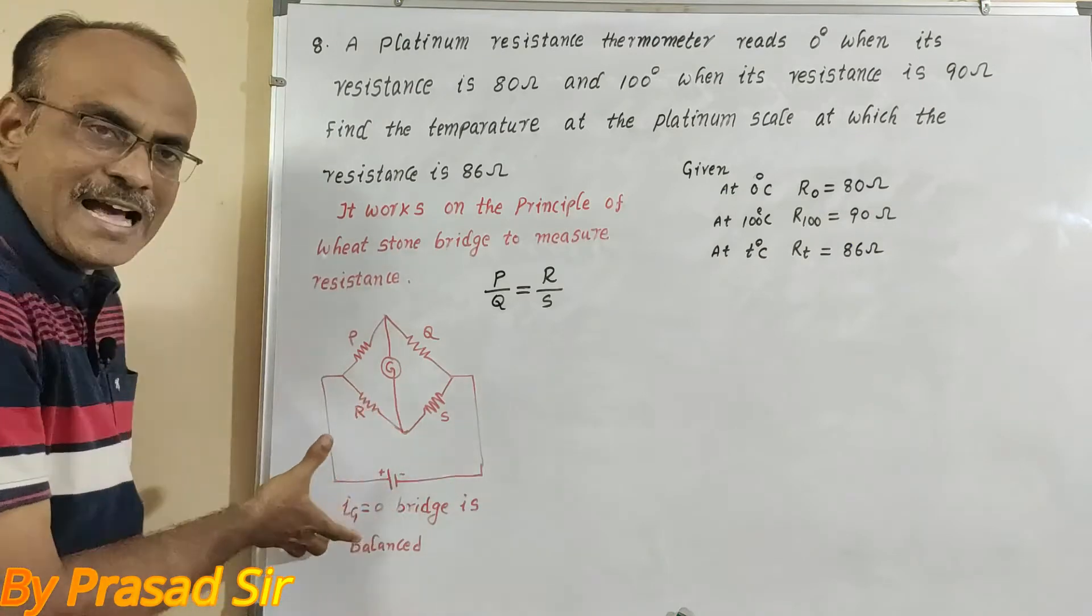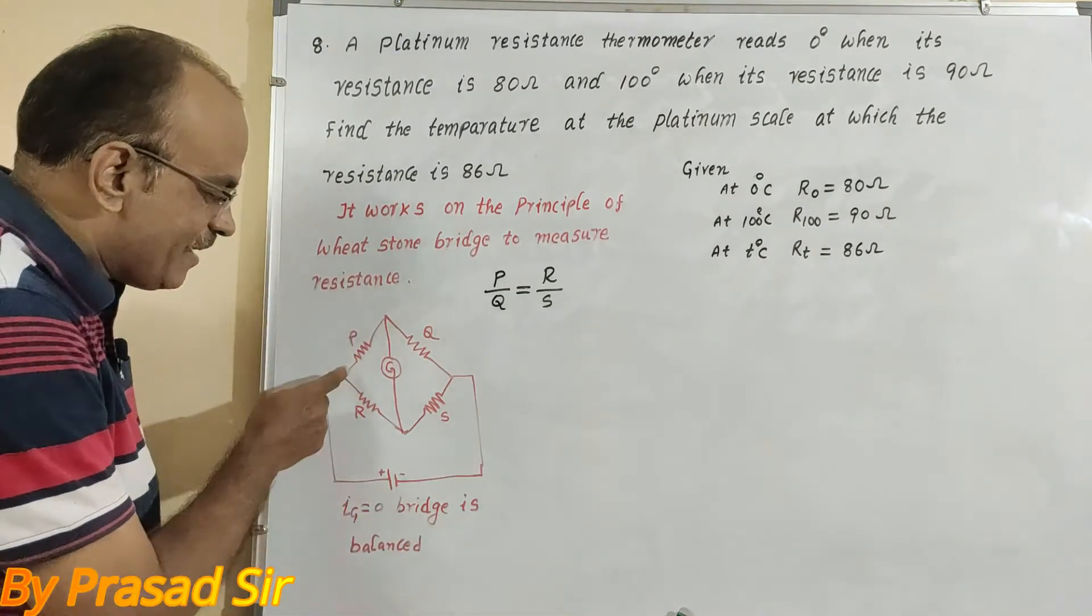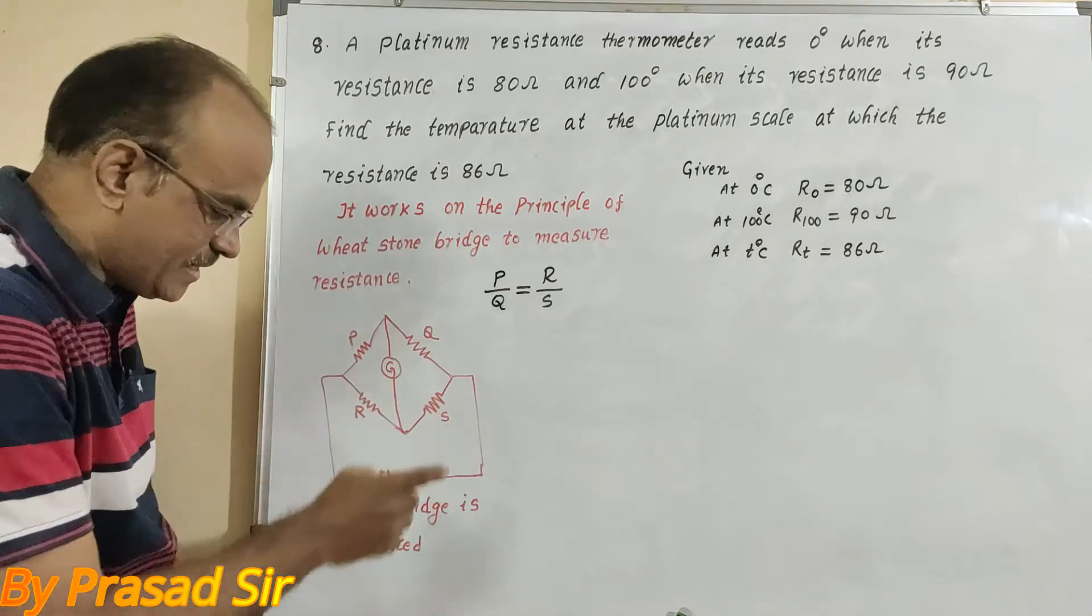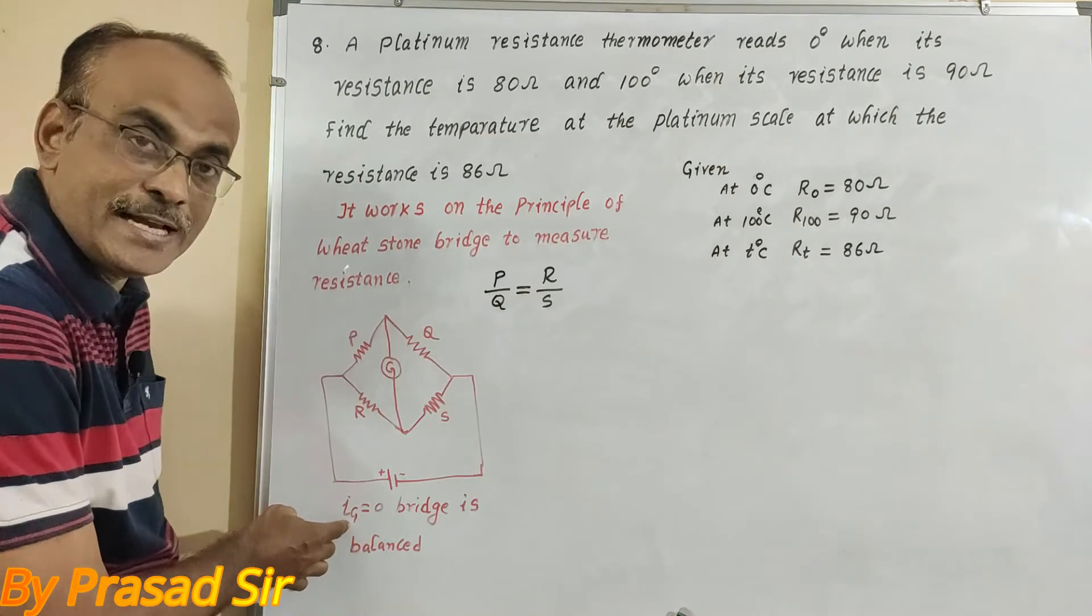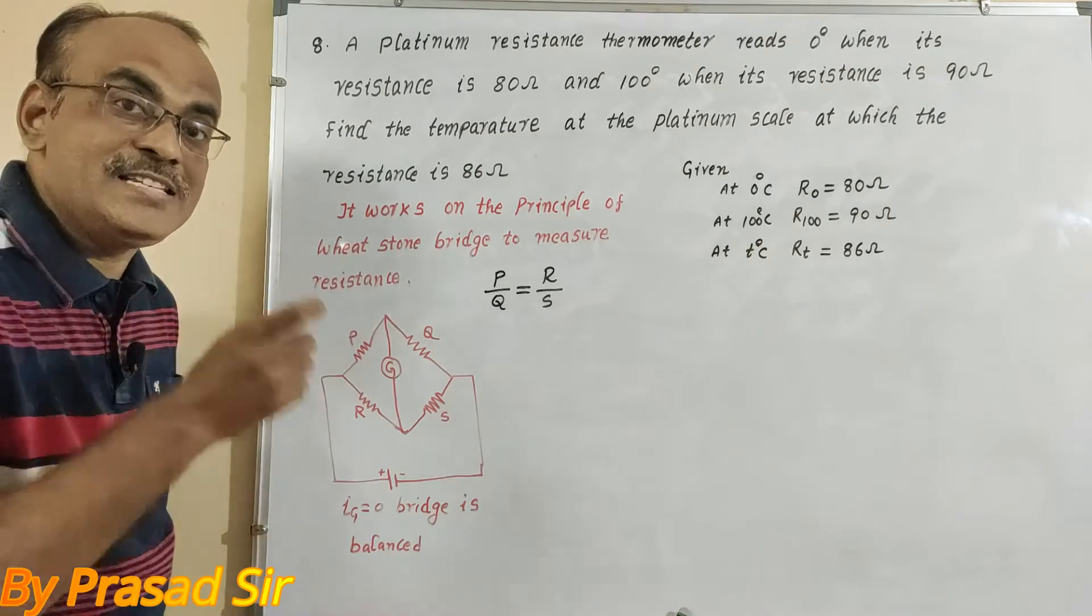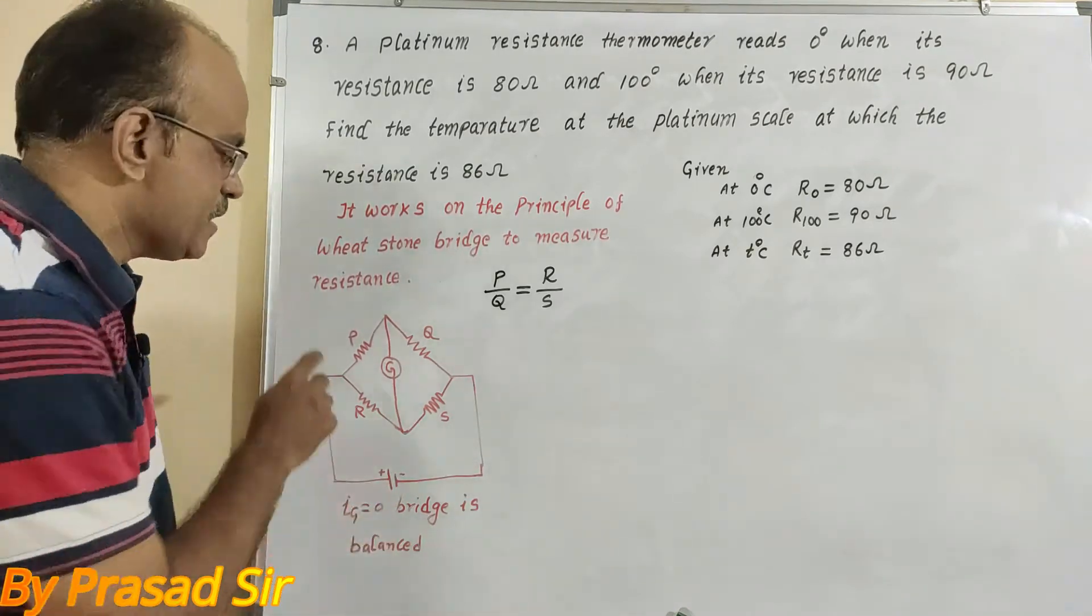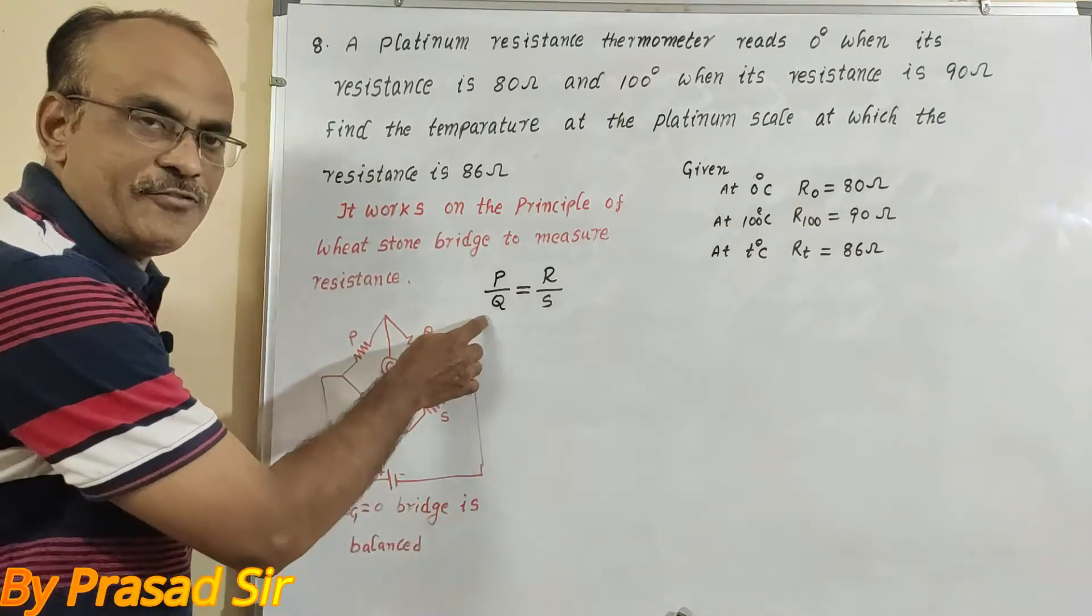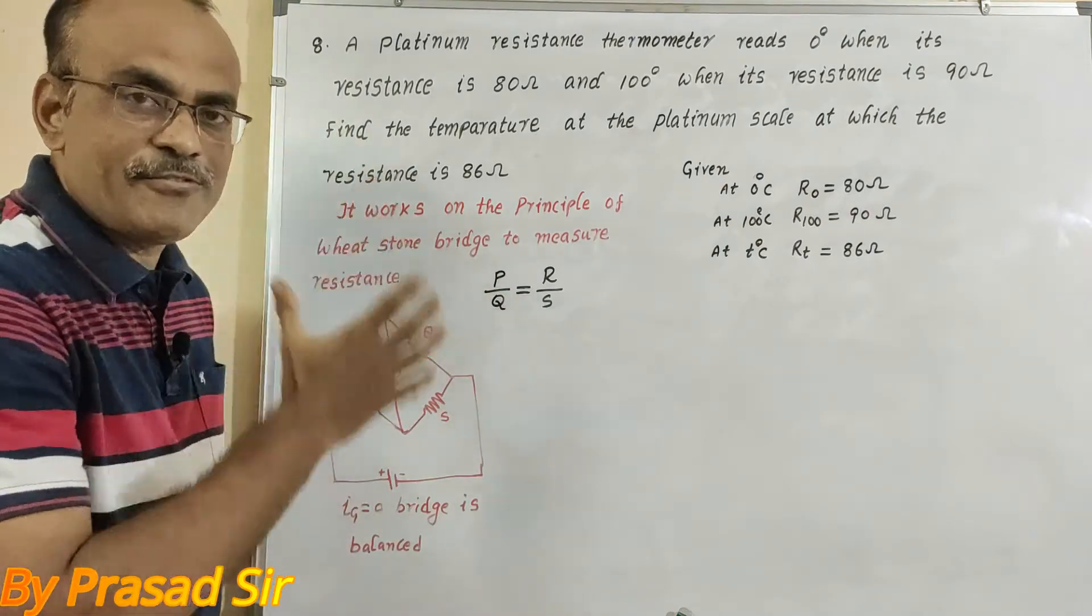Now here is the schematic diagram showing the Wheatstone bridge. So whenever the current does not pass through the galvanometer, that is represented as I_G equals 0. When the current through the galvanometer is 0, then the bridge is balanced. When the bridge is balanced, the important point is that P, Q, R, S are the resistances. We will give the formula like this: P by Q equals R by S.